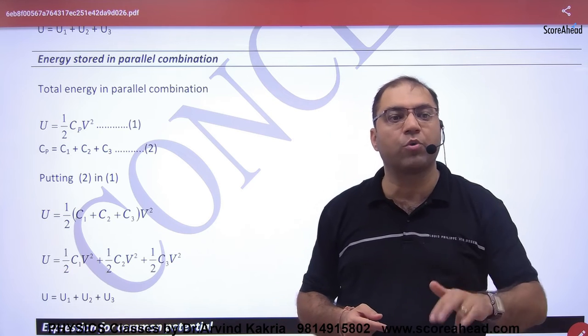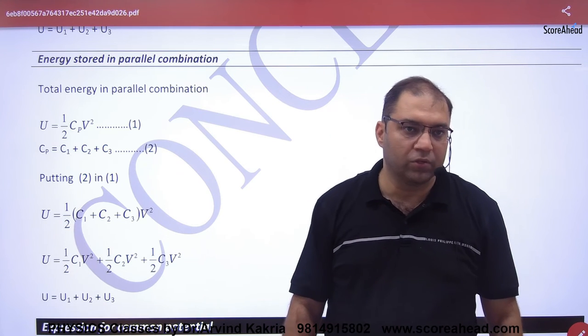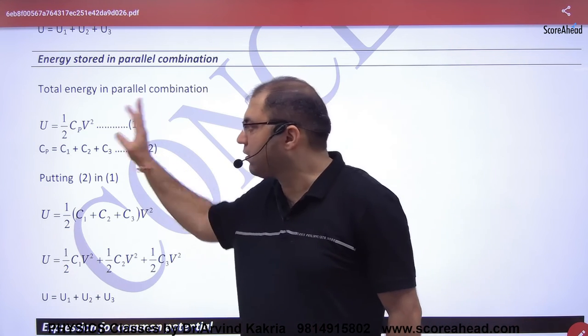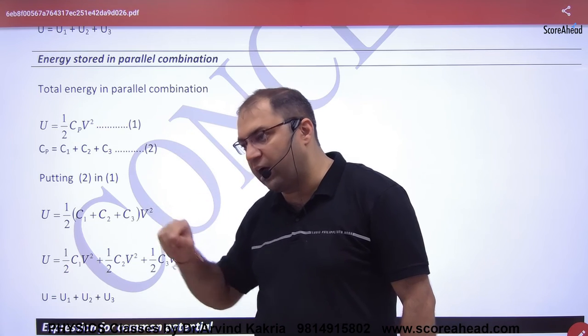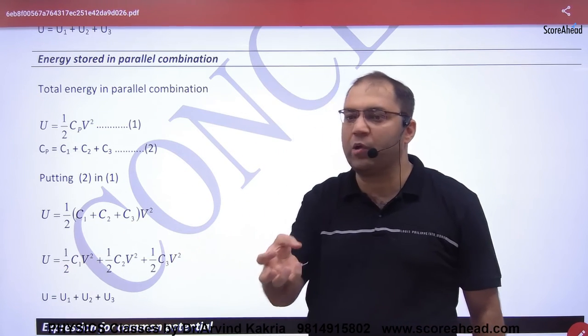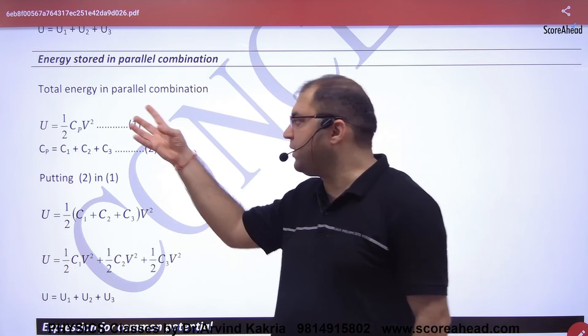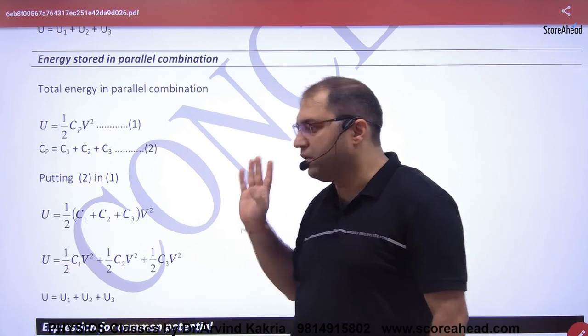We could use half Q squared by C as well. Why are we not using it? Because it's a parallel combination, so Q is divided in parallel. So what will we use? We will use the V concept. Half Cp V squared. So in parallel combination, the equivalent capacitor is Cp. Cp equals C1 plus C2 plus C3.